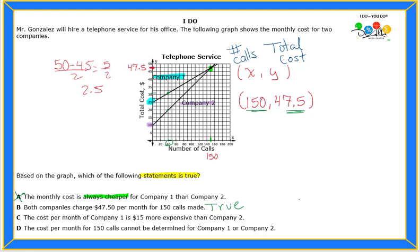But let's see the rest just so you can see that the other ones are not correct. Letter C says the cost per month of Company 1 is $15 more expensive than Company 2. Is that true? Is Company 1 going to be more expensive $15 always than Company 2?